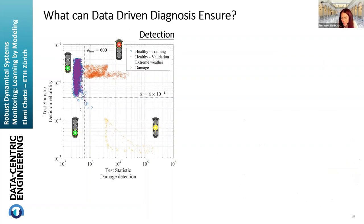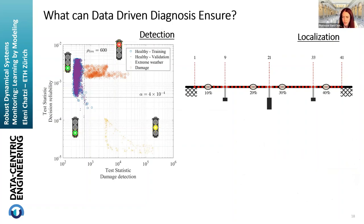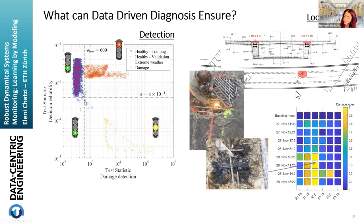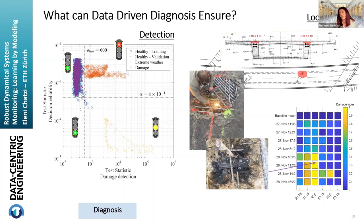Going a step further, based on the distribution of sensors on a network — here shown for a bridge rather than a wind turbine — it is possible to understand if damage could exist and, based on the sensor distribution, even localize the region where damage might occur. We have validated such metrics in practical case studies, including an application on controlled damaging of a bridge in Switzerland, where we show that localization is possible provided the right sensor types are installed in an appropriate distribution.